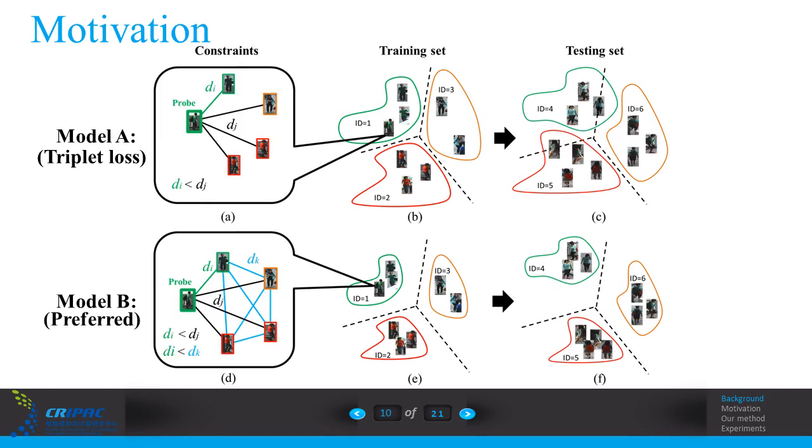The model A is corresponding to the model trained by triplet loss, where all the negative pairs contain the probe image as a reference, marked as black D. They don't care about the other negative pairs, which don't have the probe image, marked as blue D.